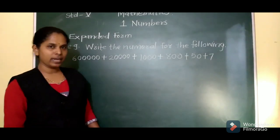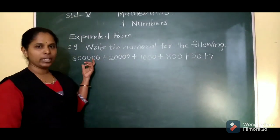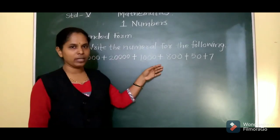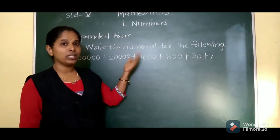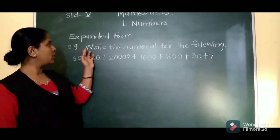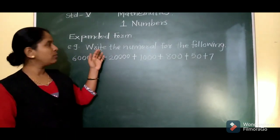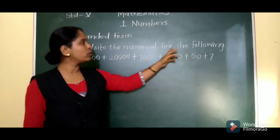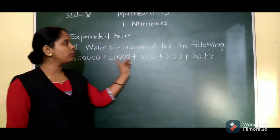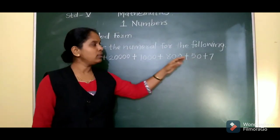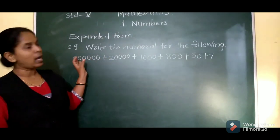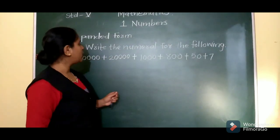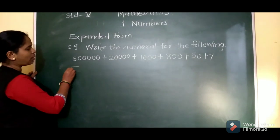As I said, they will give you the number and ask you to write the expanded form. The second way is — they will say 'write the numeral for the following.' That means they will give you the expanded form and ask you to write the number from it. We can easily form the number.